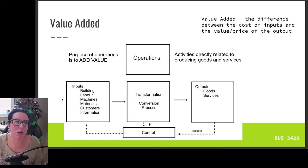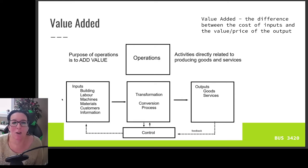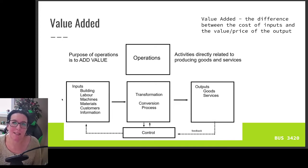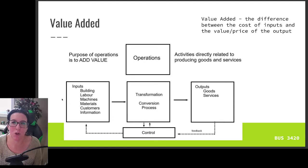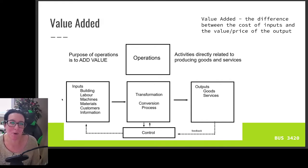We'll start by looking at the value chain. When we talk about value added, we're talking about going from inputs — our people, raw materials, buildings, machines — and adding value by transforming those inputs into outputs to make some particular good or service. If we're making Coca-Cola, for example, our inputs are going to be our labor, bottling equipment, aluminum cans, water, coloring, and sugar — all of which get transformed and turned into Coca-Cola. There are different types of transformations.